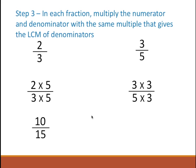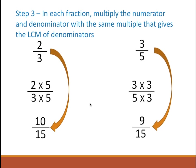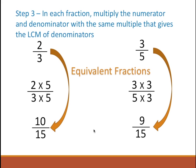So when we multiply the values we get 10 by 15 and 9 by 15. Now observe something. What do you notice between 2 by 3, 10 by 15, and 3 by 5? Remember, we multiplied the numerator and denominator with the same value in each case. So what are we looking at here? We are looking at equivalent fractions.